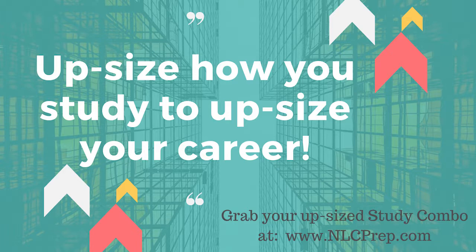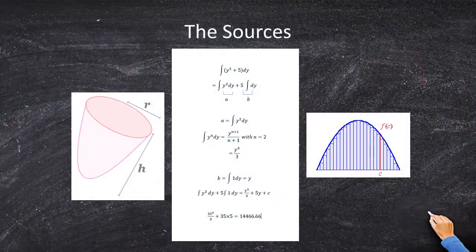Upsize to a combo and upsize your future career today. If we start off with our basic formula — π times the integral of y squared plus 5 dy — we're going to integrate this function from 0 to 35, integrating 5 plus y squared. Beginning with our basic integration, we'll break up y squared and 5 separately.